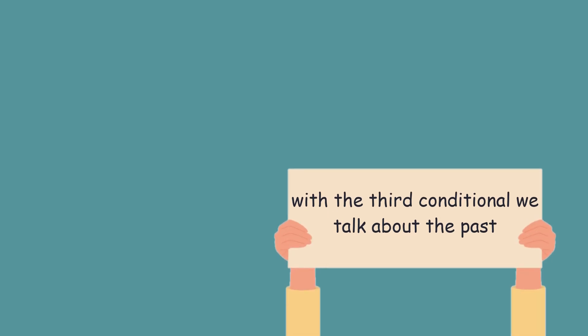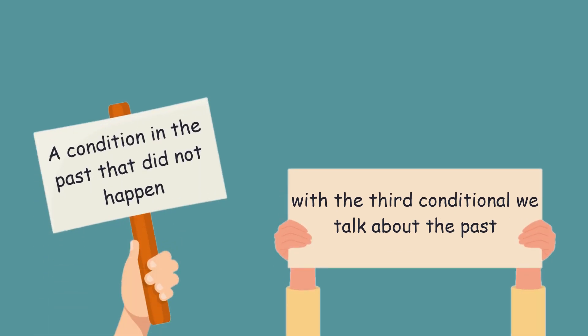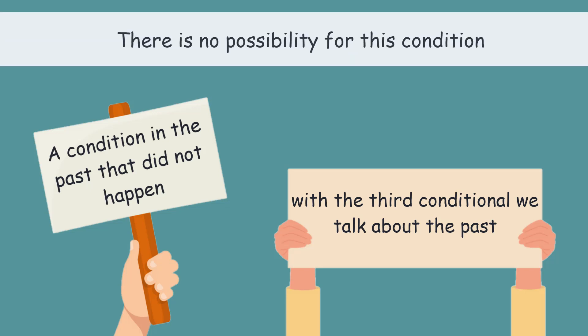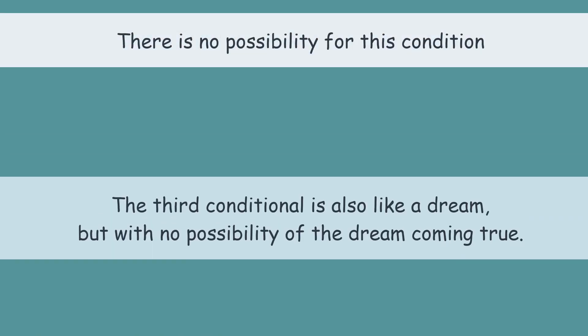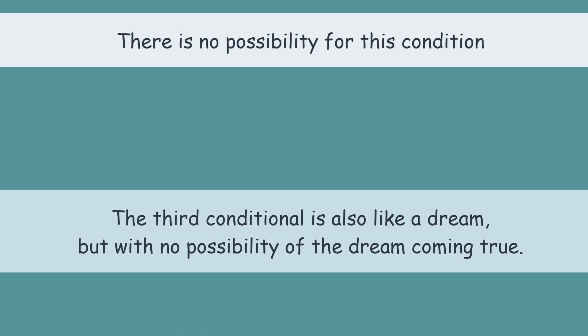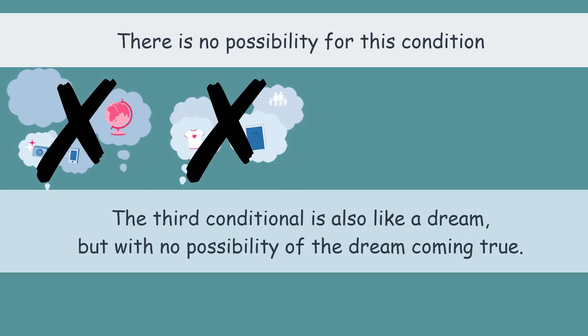With the third conditional we talk about the past. We talk about a condition in the past that did not happen. That is why there is no possibility for this condition. The third conditional is also like a dream, but with no possibility of the dream coming true.